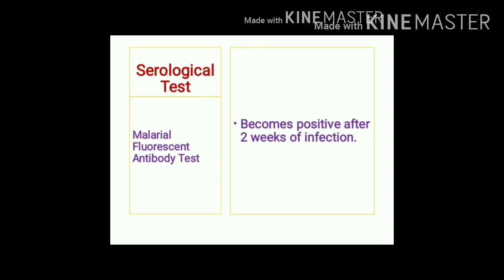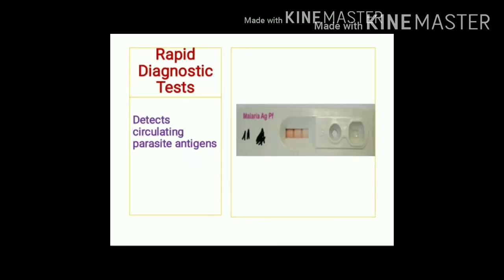The serological test — malarial fluorescent antibody test — becomes positive only after two weeks of infection, so it is of less significance in treatment. Rapid diagnostic tests (RDTs) are currently most commonly used for diagnosis of malaria as they are time-saving, detecting circulating parasitic antigens. Some kits detect vivax only, while others detect both vivax and falciparum.